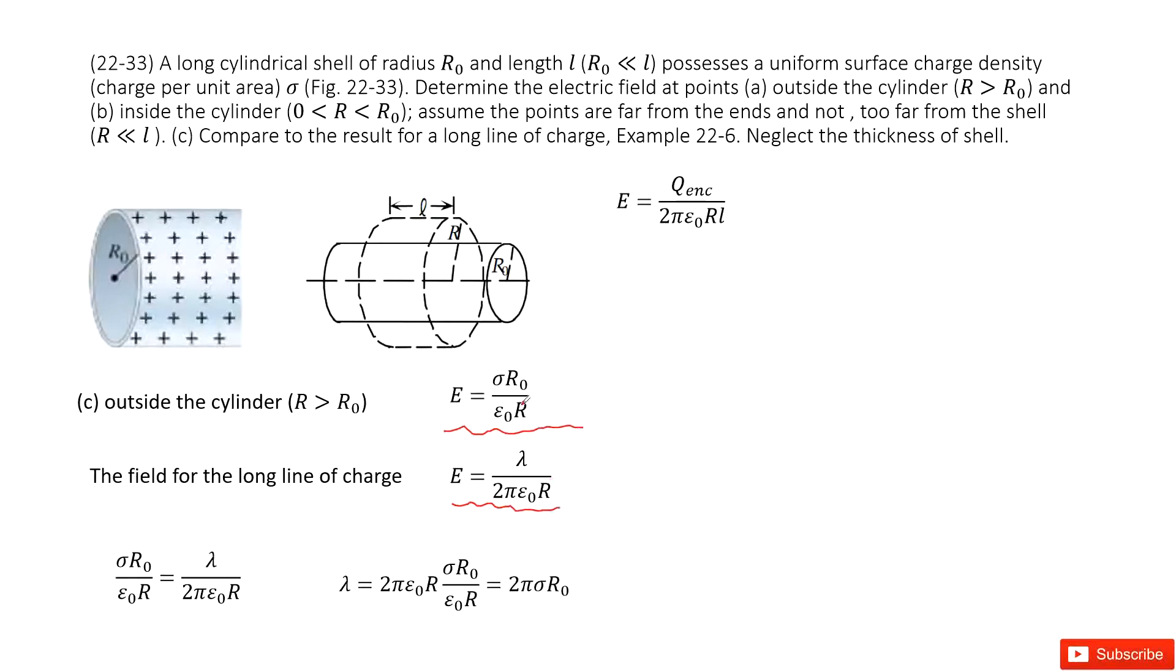If we consider this R₀ is much smaller than L, we can consider this cylindrical shell is a long line of charge. So these two equals. If these two equals, we can get the lambda. This is the linear charge density as 2πσR₀.